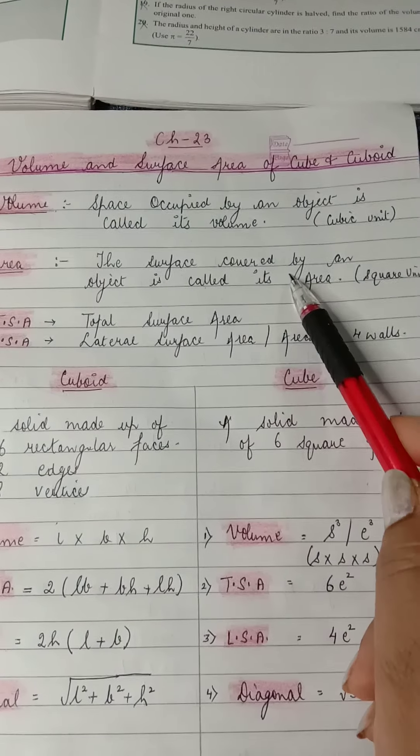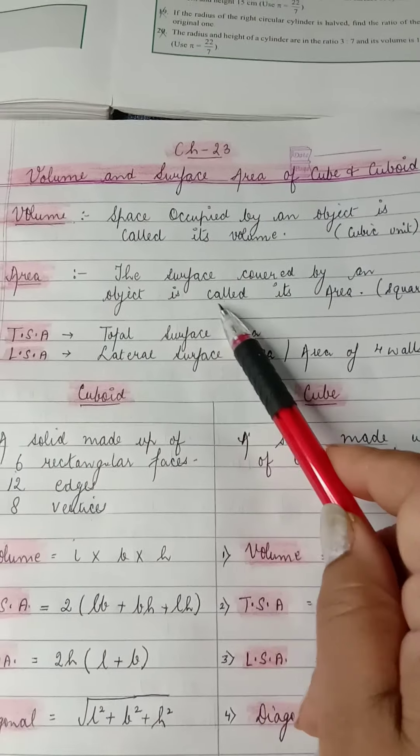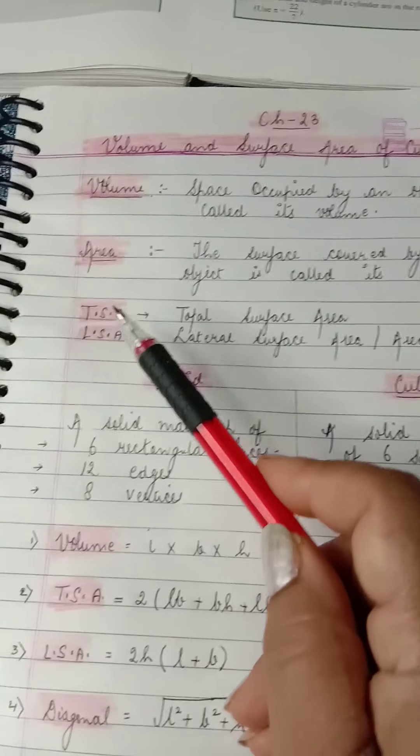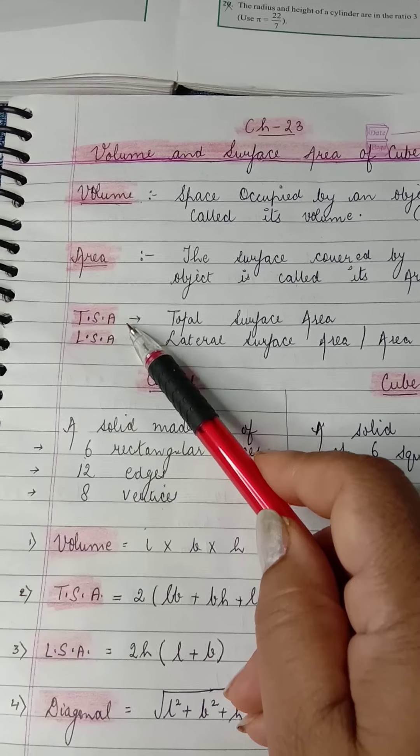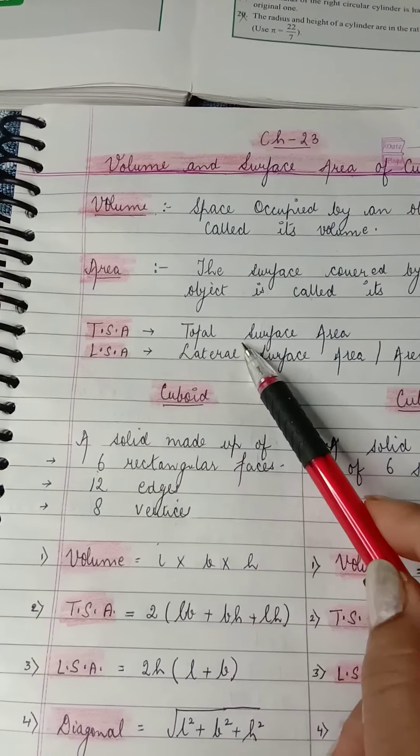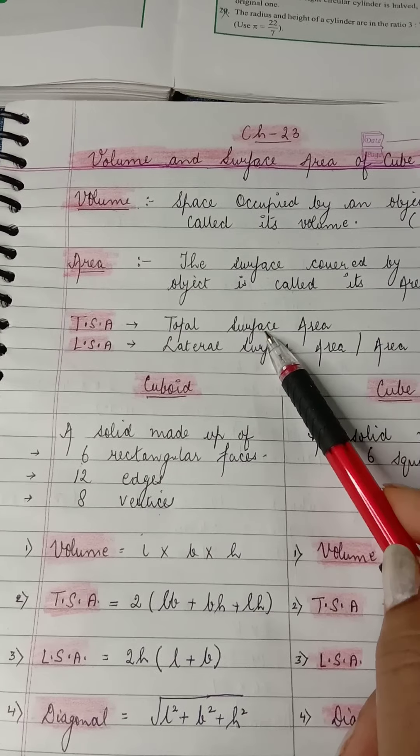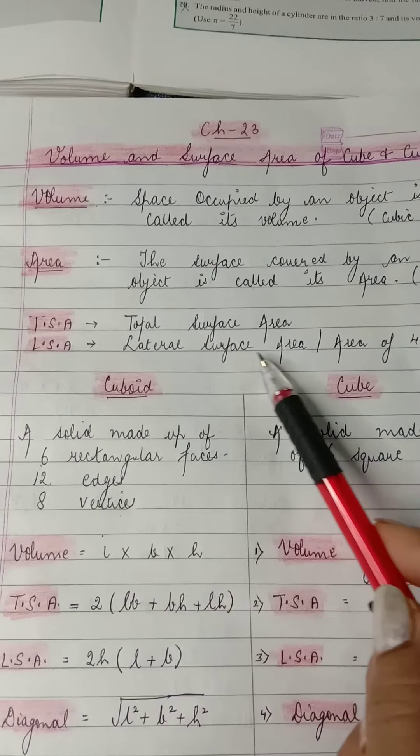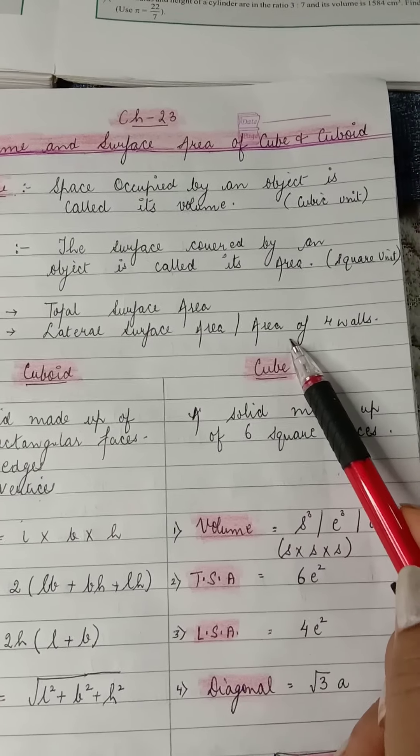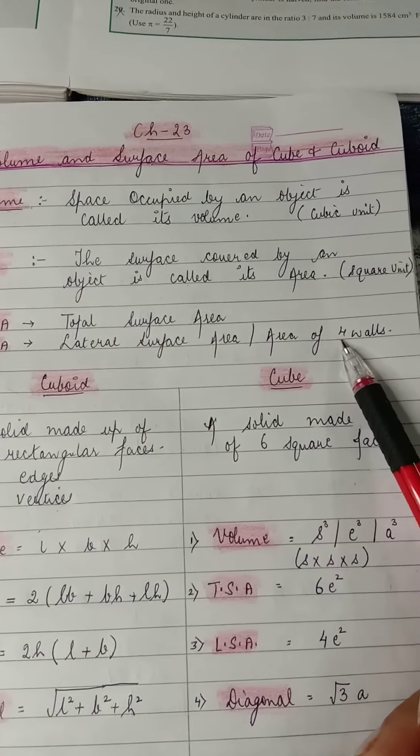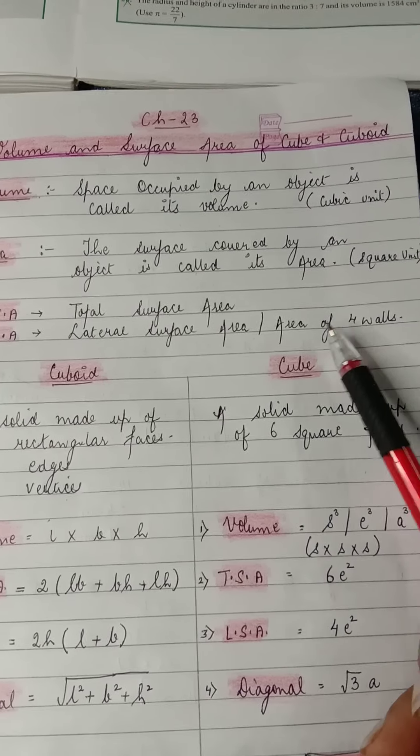Now coming to area. The surface covered by an object is called its area, and the unit is a square unit. Now what is TSA and LSA? TSA stands for total surface area, which can also be written as surface area. LSA stands for lateral surface area or area of four walls.